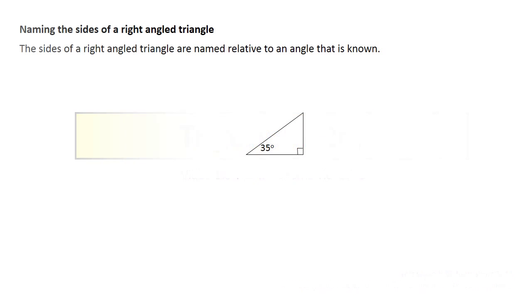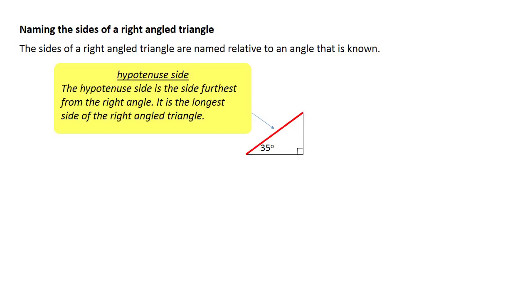In this video, we are using trigonometry to find out the unknown side of a triangle. The first thing that we need to know is how to name the sides of a right angled triangle. We already know the name of one of the sides: the hypotenuse side.